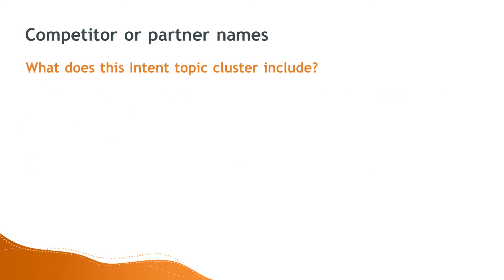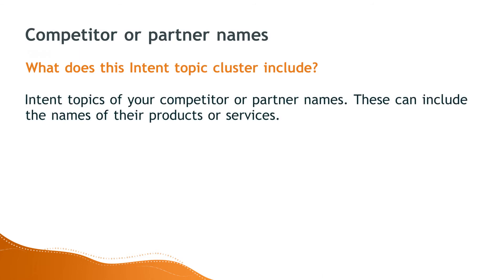Then think about your competitors. This can include competitor or partner names, product or service names that you want to monitor, which can provide you insight into your competitive set. This would be your second set of intent topic clusters.